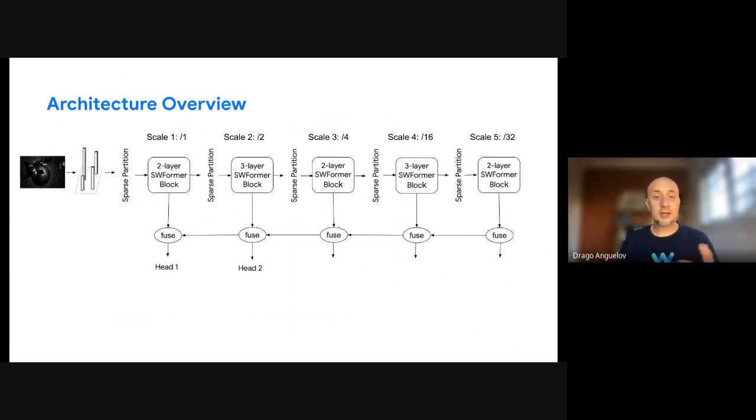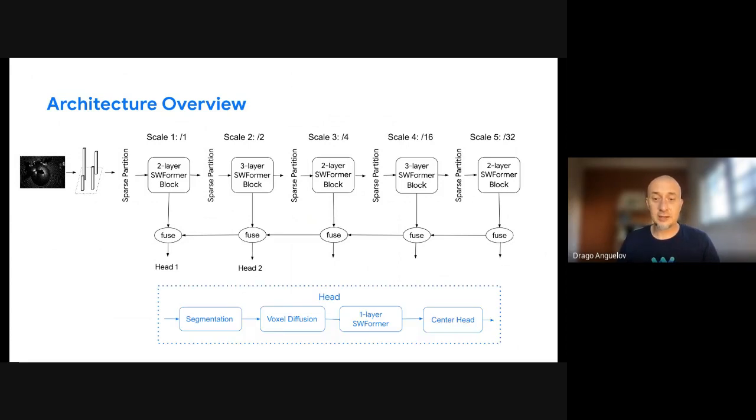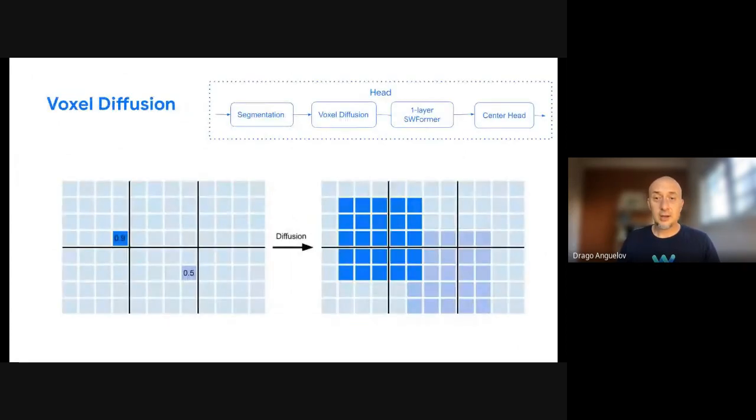And so to mitigate this issue or to improve the quality based on this insight, we propose a voxel diffusion model. So it's a different head design. And at the core of this design is, first we segment voxels in bird's eye view towards the end to be foreground or background. The background voxels are dropped. And for foreground, we apply a max pooling operation, shown in this picture, with the specific diffusion size relevant to the size of objects we expect to detect. And so after diffusing to nearby voxels, we apply one sparse window transformer layer and apply a standard box head. And that improves the results, especially for large objects.